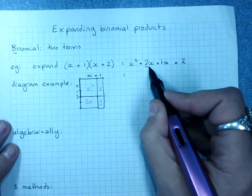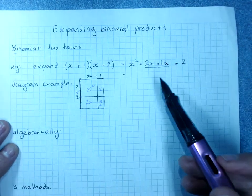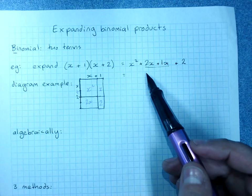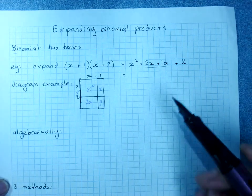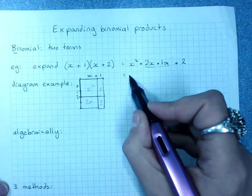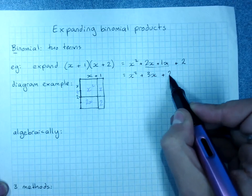And the two middle terms, or two of the terms in your binomial expansion, usually depending on what we've got here, will often end up as like terms. It will depend on what our terms in here are. Because 2x plus 1x is 3x. So the result is x squared plus 3x plus 2.